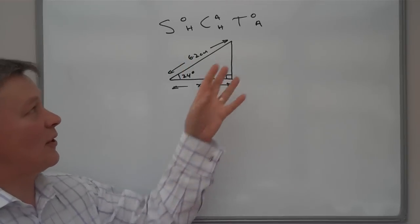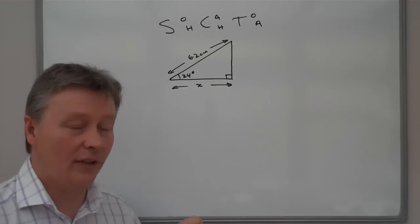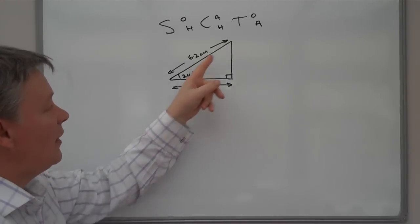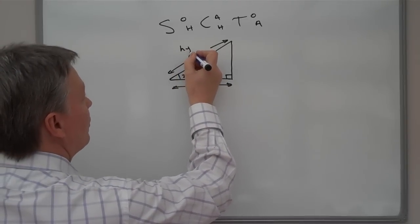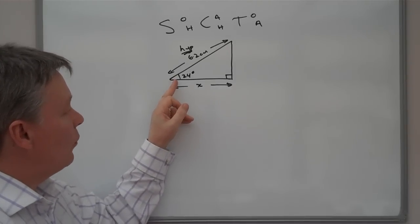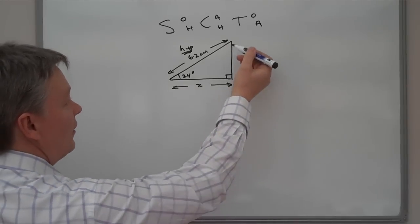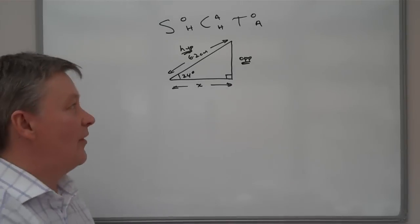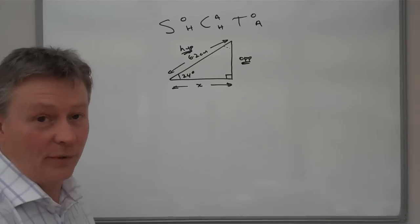So, the key issue with dealing with SOHCAHTOA or dealing with trigonometry is that actually you do need to label this triangle in a way that is relevant to the formulas themselves. So, what we're going to look at is that the length of any right angle triangle, the longest length is always called the hypotenuse. So, I'm going to put just hyp there. The other thing to be aware of is that we're looking at the 24 degrees angle here. So, opposite this 24 degrees is this length over here. So, we're going to call that the opposite.